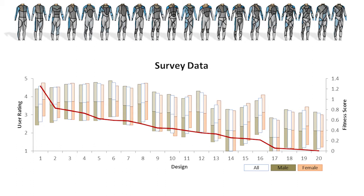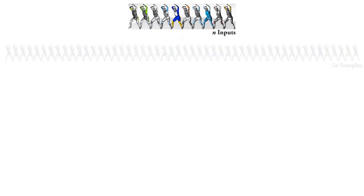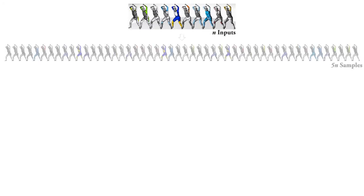The x-axis represents the designs, sorted by their fitness score. It can be seen that the user rating is basically matching with the fitness score, with only a little perturbation. This is a demonstration of the overall evolution algorithm. Given 10 input designs, our framework will generate 50 random samples using crossover and mutation operations.